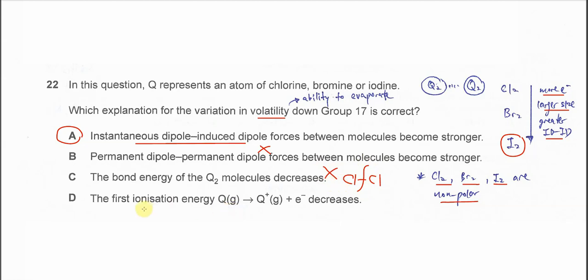And the first IE also cannot explain this volatility because it's the removal of electrons from the atom. So this one also cannot be accepted, so answer confirmed is A. That's all, thank you.